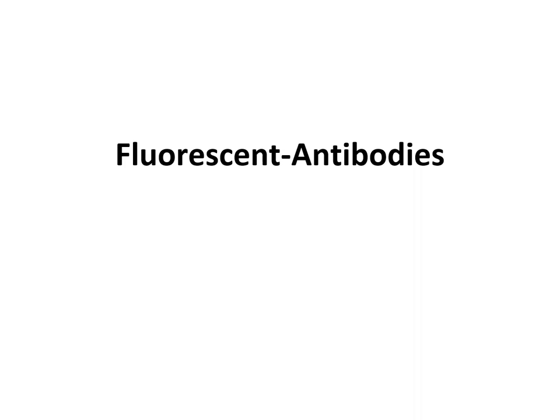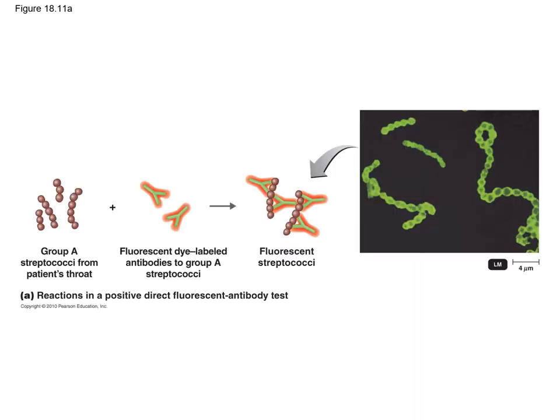One common type of conjugated antibody is fluorescent antibodies, labeled with a molecule that will fluoresce or glow. One application for fluorescent antibodies is direct staining. An example would be a strep test for a patient suspected of being infected with group A streptococci, the typical type of streptococcus that causes strep throat. You take a swab from the patient's throat and then add fluorescent antibodies that are specific for group A streptococci.